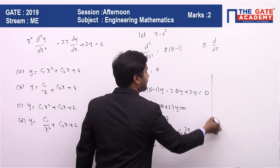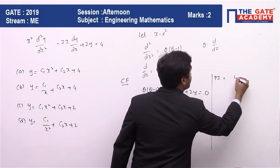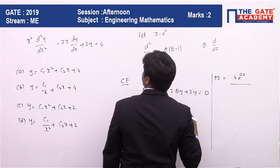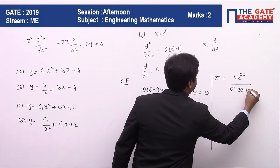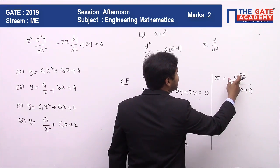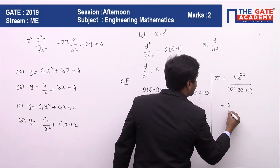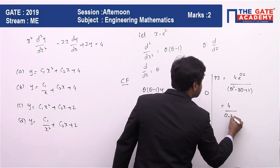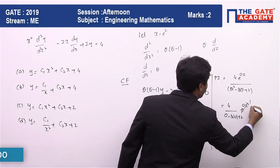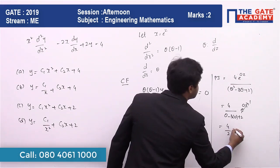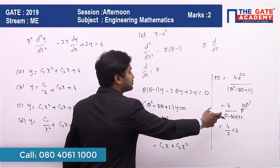Next is the particular integral. We write it as 4·e^(0z) divided by (theta² minus 3·theta plus 2). Here we can directly substitute 0, giving us 4 divided by (0 minus 0 plus 2), multiplied by e^(0z), which is 1. So it is 4 by 2, and the particular integral equals 2.